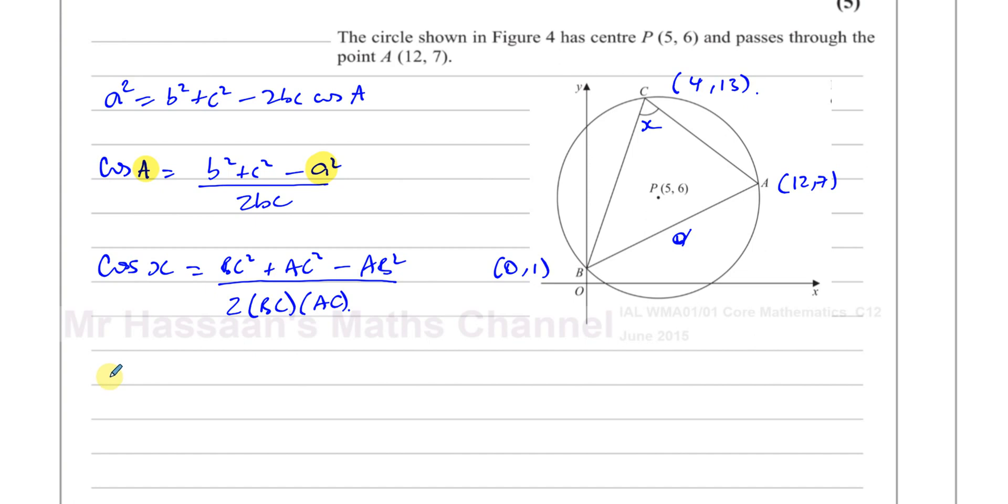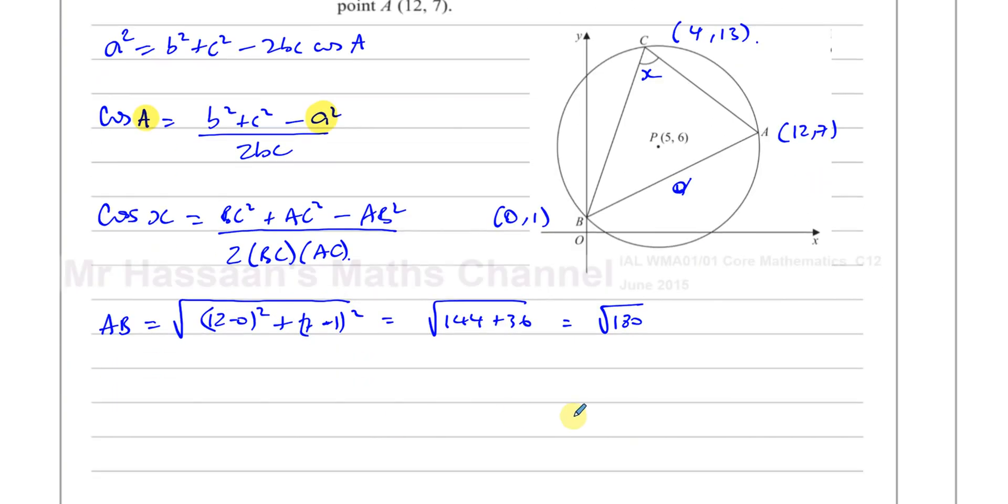So let's start with AB. So AB is going to be the square root of the distance between these two points is going to be the X distance is 12 minus 0 squared plus 7 minus 1 squared. Okay, so that's going to be the square root of 144 plus 36, which is the square root of 180. You can leave it like that for now. We don't have to write it in simplified surd form, because in the end we just can find the angle. So we can leave it in that form. That makes life a bit easier for us when we're dealing with stuff.